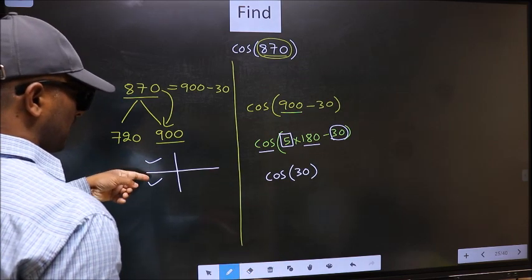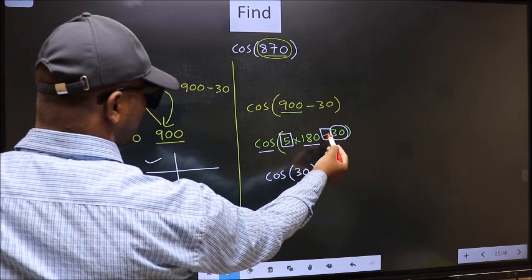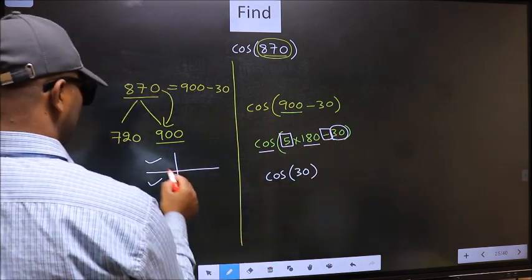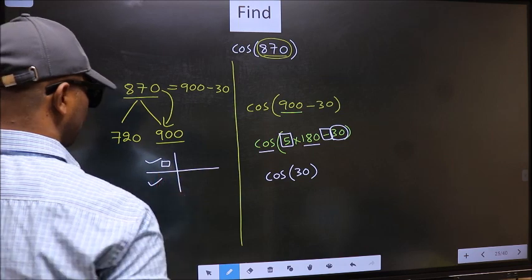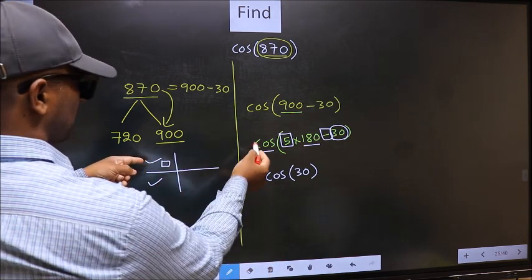So, now to select the quadrant, we should look at this symbol. Here we have negative. That means the angle lies in the second quadrant. And in the second quadrant, cos is negative.